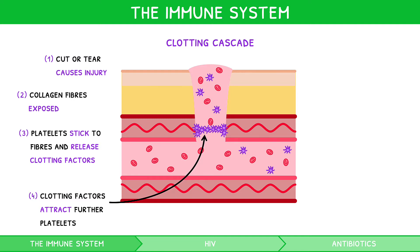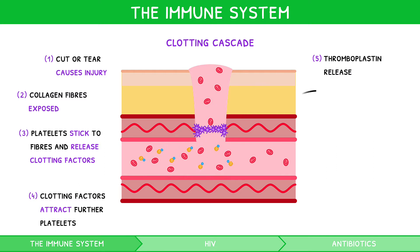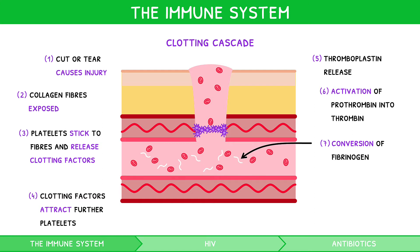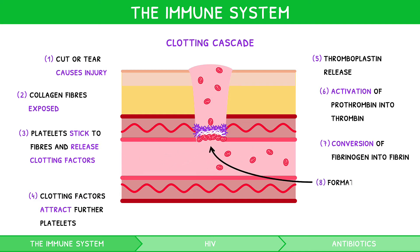Further chemical changes then lead to the release of thromboplastin, a chemical which activates a protein within the blood known as prothrombin into another known as thrombin. Thrombin can then convert another inactive soluble protein within the blood, known as fibrinogen, into its active and insoluble form, known as fibrin. Fibrin production forms a network of fibres, known as a clot.